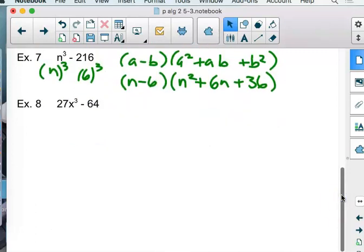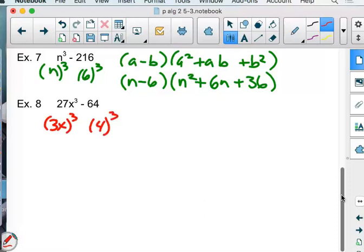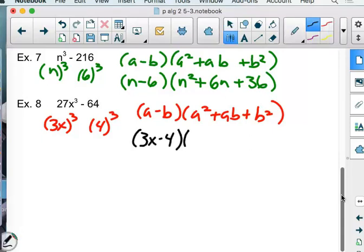Oh, 27x cubed minus 64, is there anything we could take out of both the 27 and the 64 and make it smaller? You might not want to, right? Because what do you cubed to get 27? 3. What do you cubed to get 64? 4. So, maybe we don't want to find anything anyway. 3x cubed, 4 cubed. Should I put subtraction in the first set of parentheses, or the second set? First, right there, that tells me. So, what's going to go in our first set of parentheses? 3x minus 4. I'll be careful. First term, good, 9x squared.